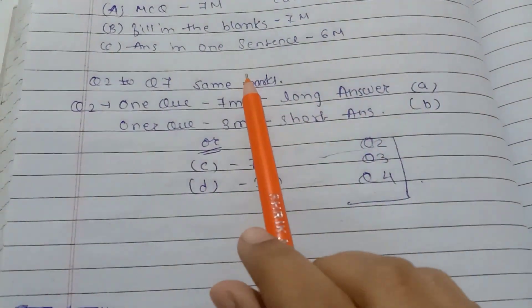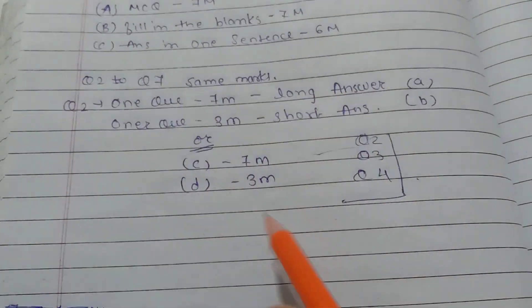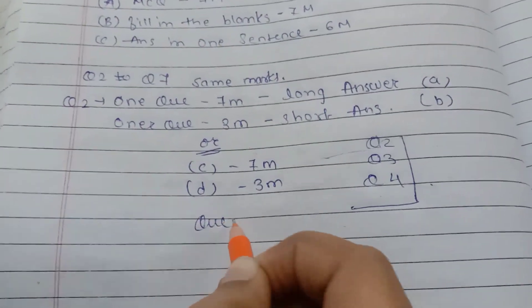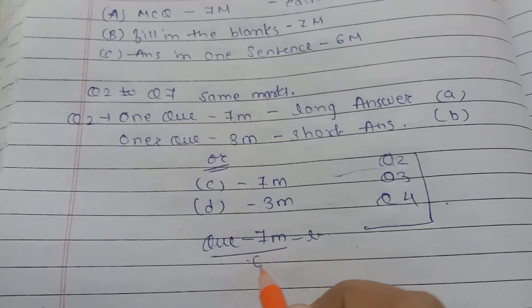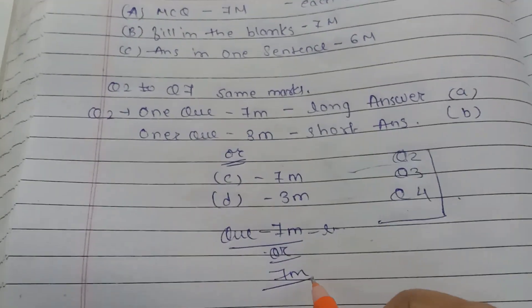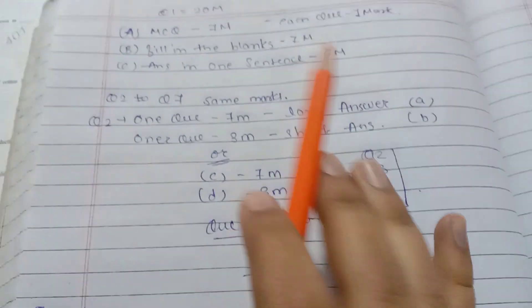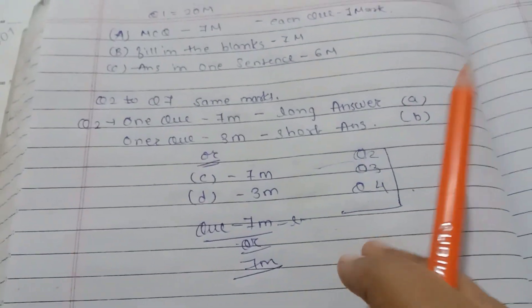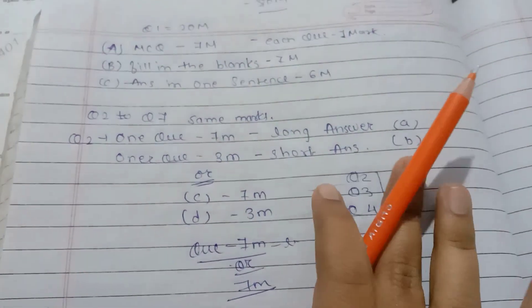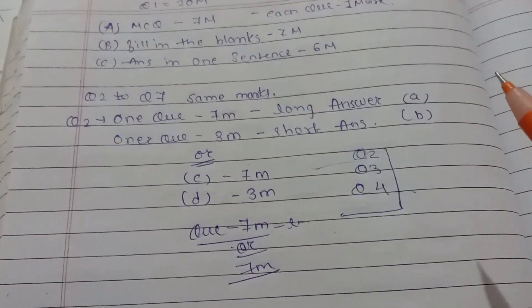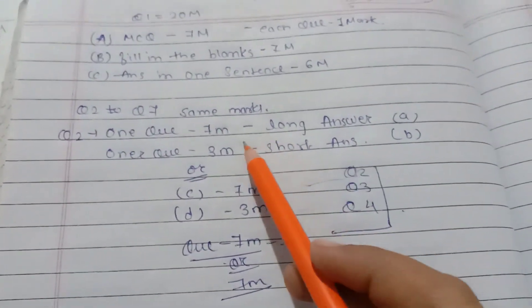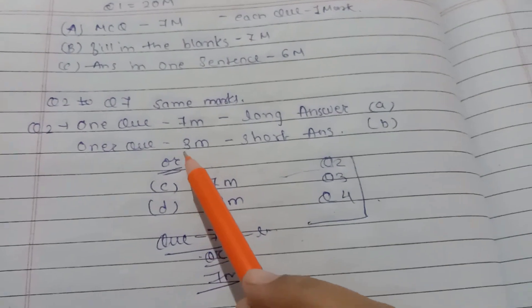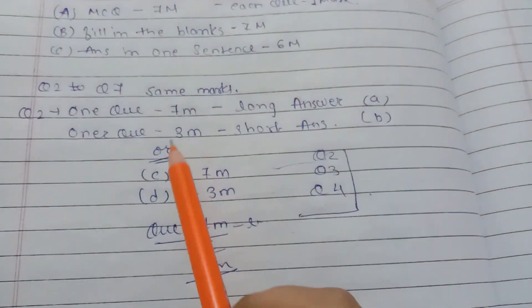Question number 2 to 7 follow the same pattern — long answer type for 7 marks each. This is the marking system, and it is 99% fixed. The paper sequence might vary slightly, but the rest remains like this. We will prepare according to this marking scheme.